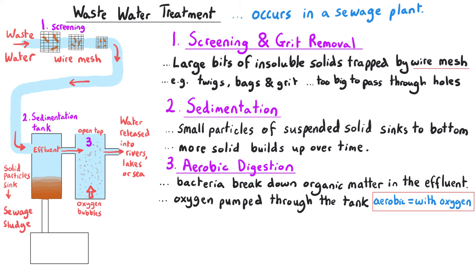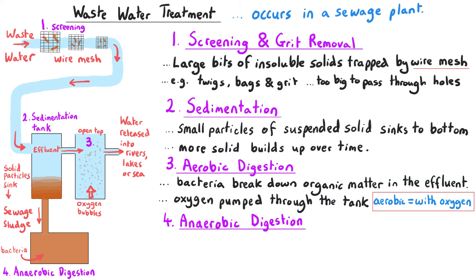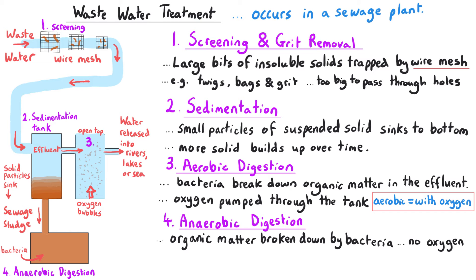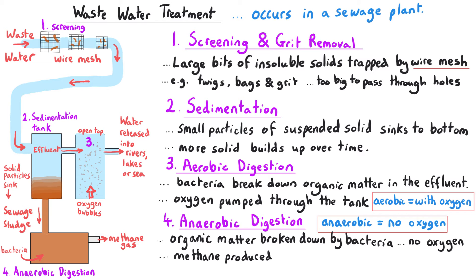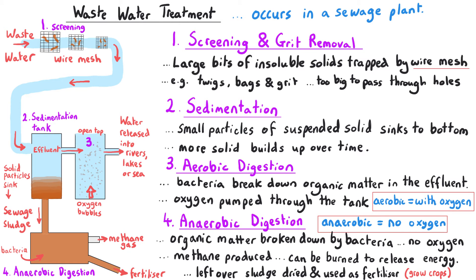Meanwhile, the sewage sludge from sedimentation is moved into a different tank. Bacteria are added here as well, but crucially, there is no oxygen. The bacteria use anaerobic digestion to break down the organic matter in the sludge — anaerobic meaning no oxygen is present. As a result of this process, methane gas is released, which can be burned and is useful as an energy source.